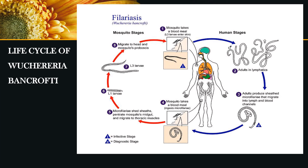This is the life cycle of Wuchereria bancrofti, which we would have started studying in microbiology and parasitology. The mosquito takes a blood meal from an infected host, with adults present in the lymphatics. Sheathed microfilariae migrate into the lymph and blood channels. The mosquito takes a blood meal and ingests microfilariae, which then shed their sheaths, penetrate the mosquito's midgut, and migrate to the thoracic muscles. The larvae migrate to the head and the mosquito's proboscis, and when it takes a blood meal, it again infects another person.